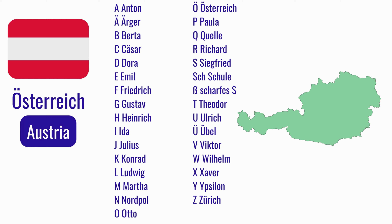N wie Nordpol. O wie Otto. Ö wie Österreich. P wie Paula. Q wie Quelle. R wie Richard. S wie Siegfried. Sch wie Schule. Scharfes S. T wie Theodor. U wie Ulrich. Ü wie Übel. V wie Viktor. W wie Wilhelm. X wie Xaver. Z wie Zürich.